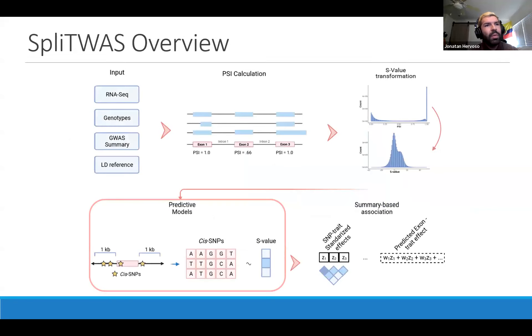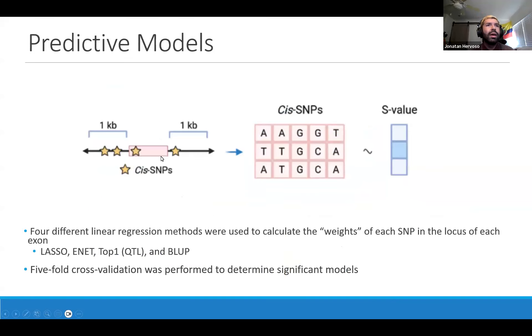Moving to our predictive models, the way we define them is through a heritability window, or a window where we identify our cis-SNPs. In our case, in the example to the left, we have an exon as a pink block, and the stars are cis-SNPs. We add a surrounding heritability window where we expect there to be genetic regulation relating to our exon. In this toy example, I say 1kb - I'll be talking more about that, but we end up using a larger window.